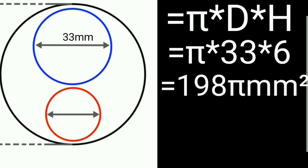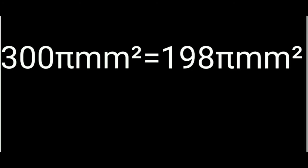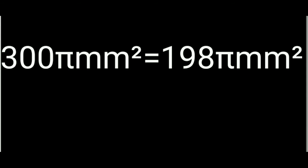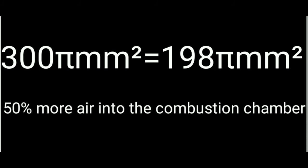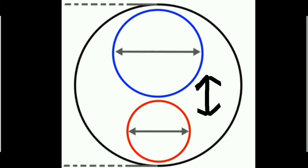Comparing the inlet valve results: the two inlets from the four valve system give a total circumferential area of 300π mm², whereas the two valve system's single inlet valve gives 198π mm² — that is almost a 50% increase in intake area, allowing 50% more air into the cylinder for more efficient combustion. You can increase valve size and lift in a two valve cylinder, but it creates clearance issues between the inlet and outlet valves.